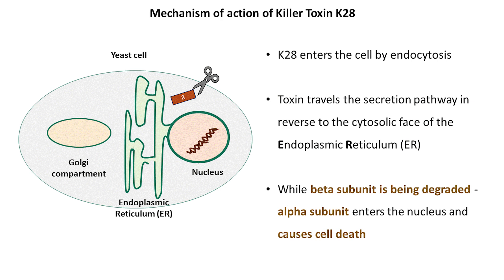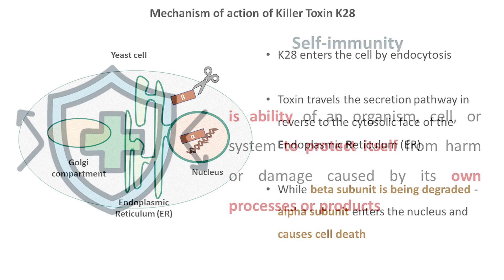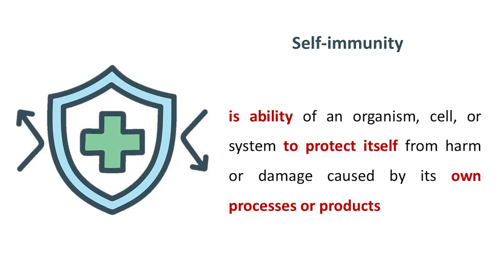The beta subunit is subsequently marked for proteasomal degradation, whereas the alpha subunit enters the nucleus, blocks DNA synthesis, arrests cells in early S-phase of the cell cycle, and causes cell death.